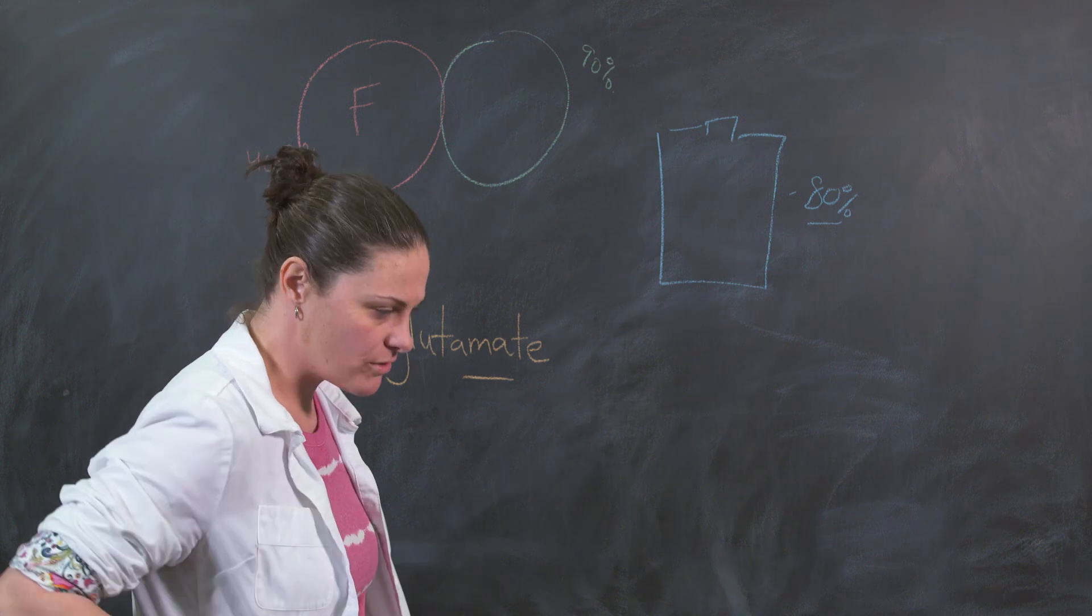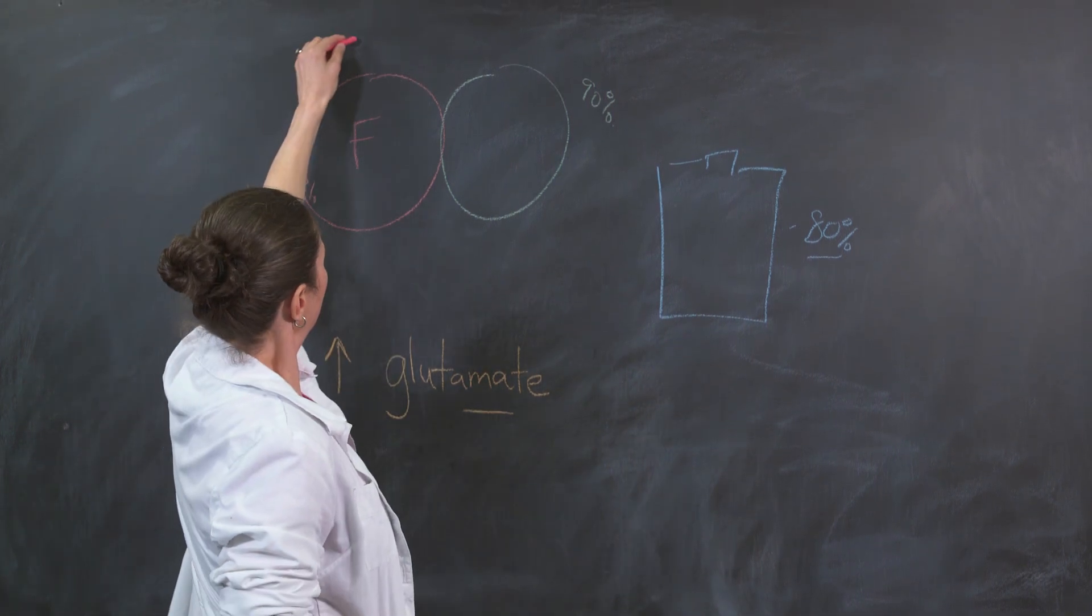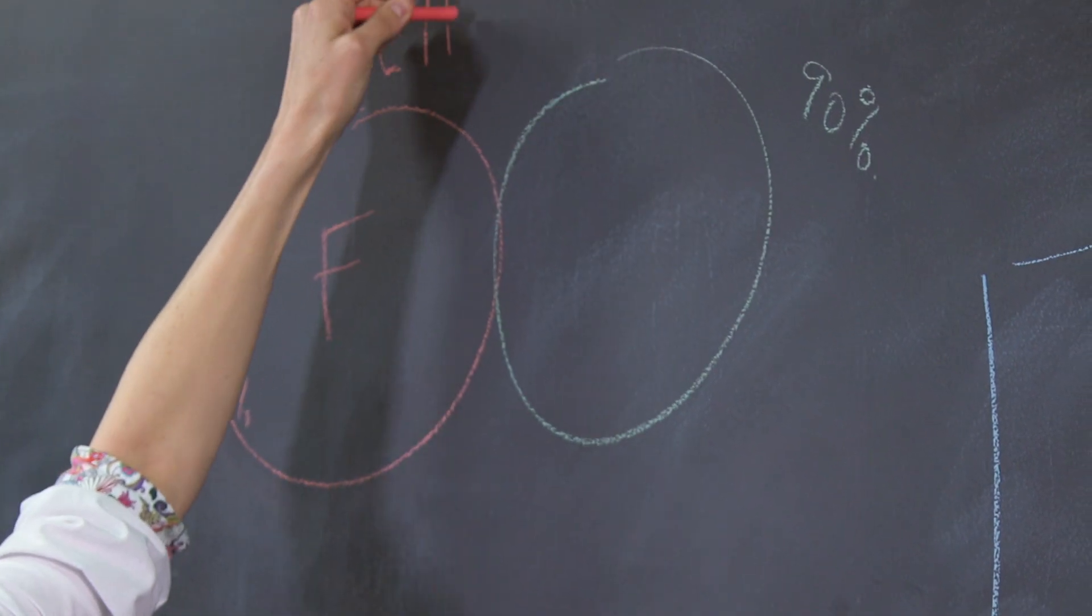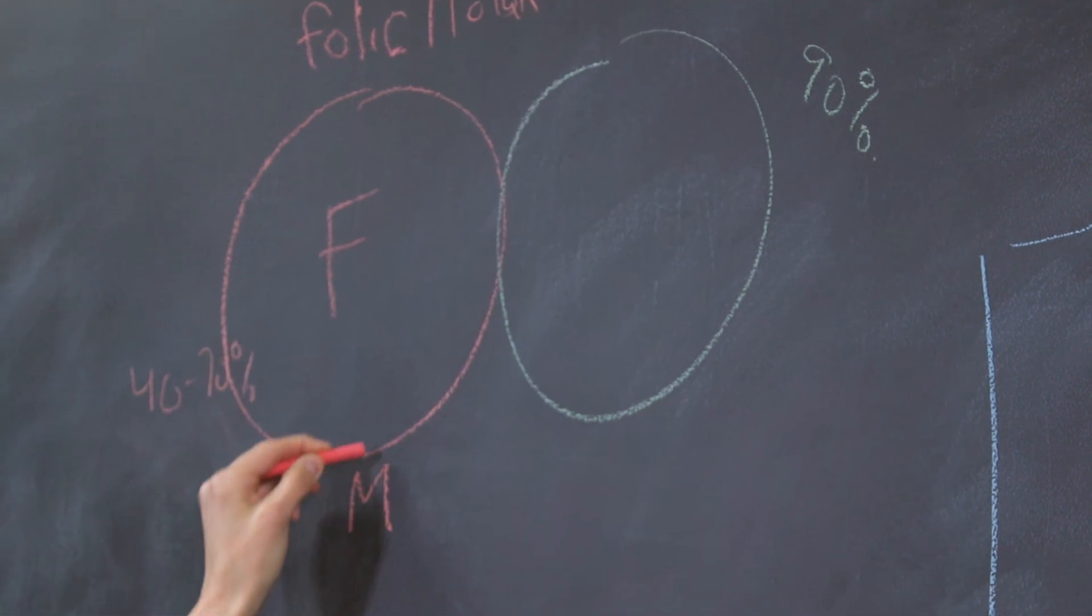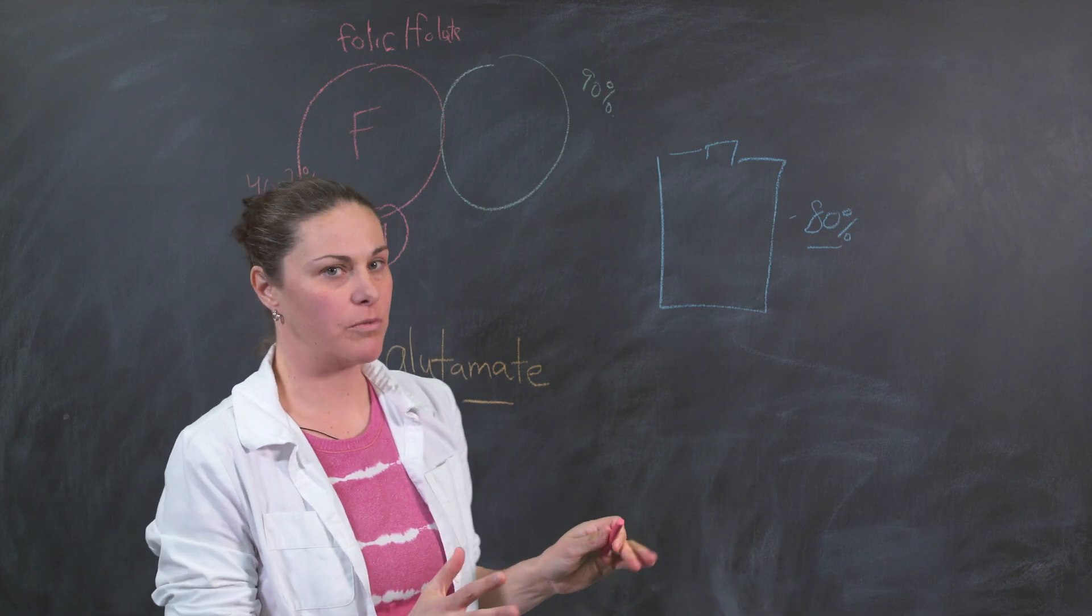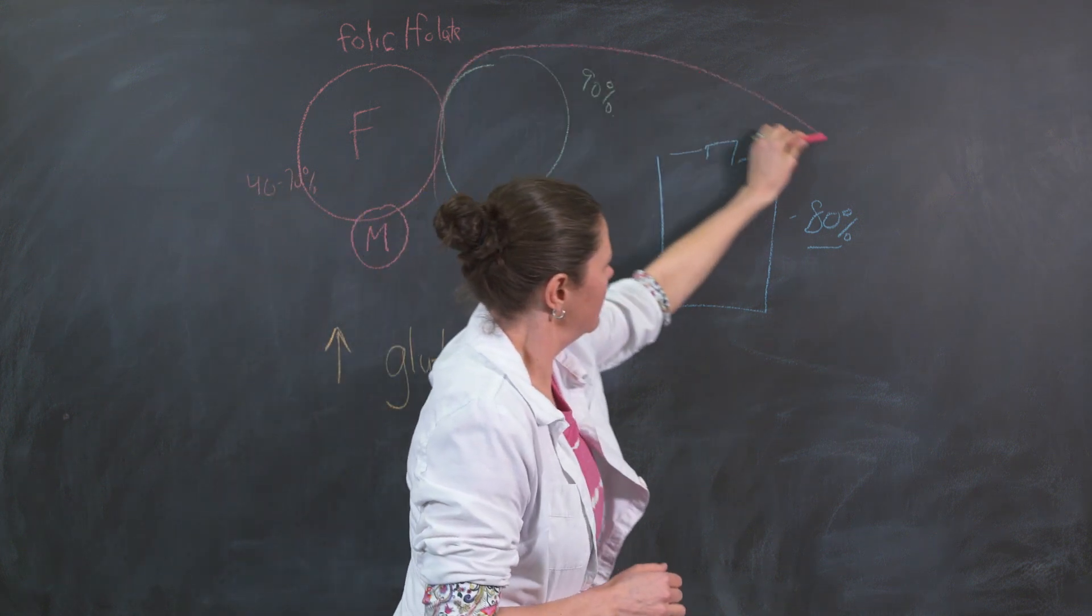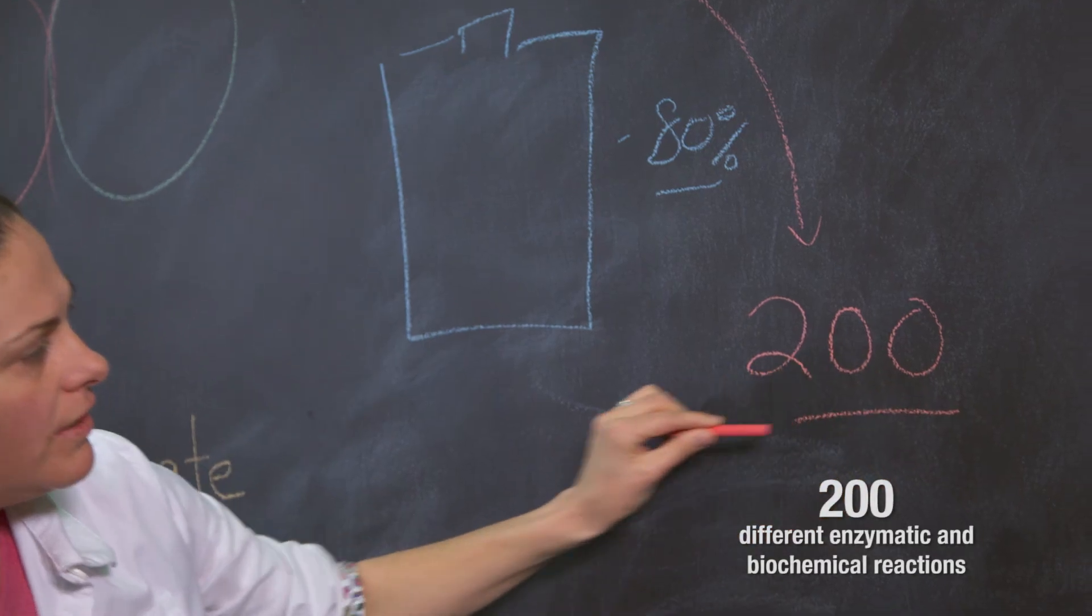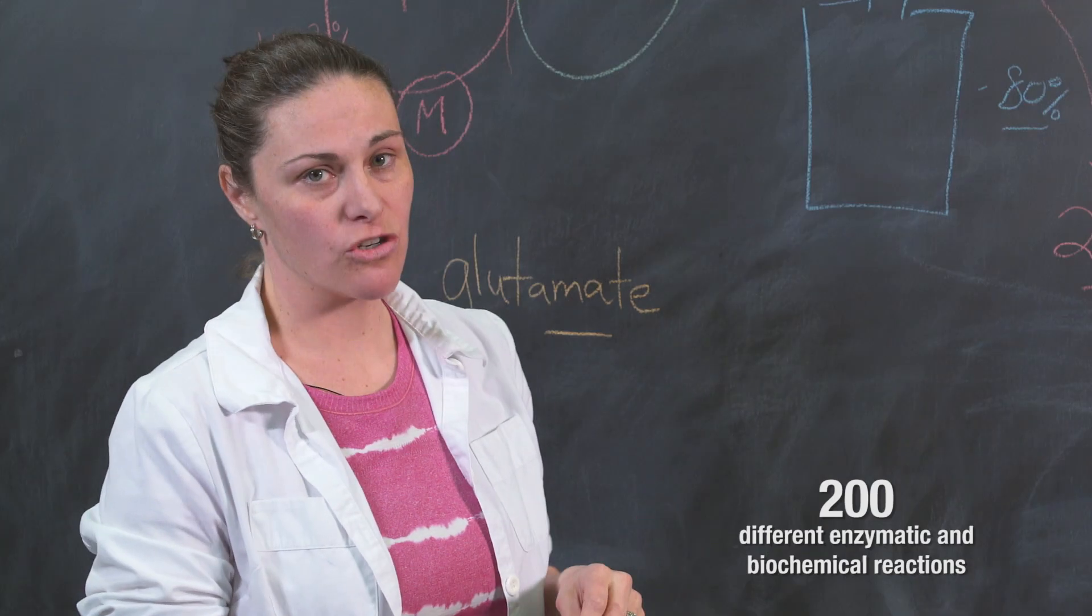The methylation cycle governs about 200 different things within the body. It takes synthetic folic acid or folate from the diet and it converts it into methylfolate. Essentially methylfolate is like gold for the brain. This methyl donor travels over here and it donates itself to 200 different enzymatic and biochemical reactions within the body. Most of them are essential for development.